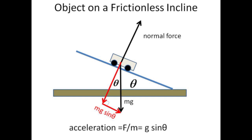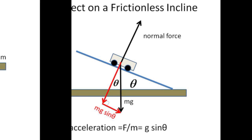If the angle is zero, so the incline is flat, there is no acceleration. If the angle is 90 degrees, so the incline is a vertical cliff, the acceleration is g — the acceleration of gravity at the surface of the earth.